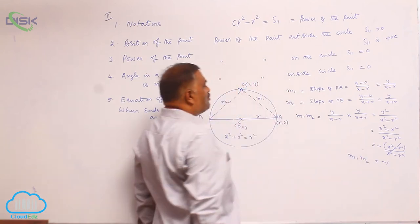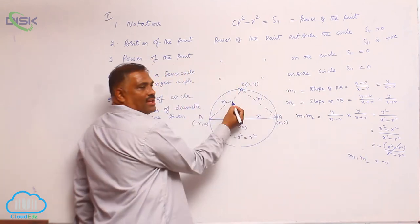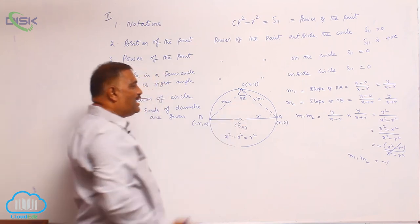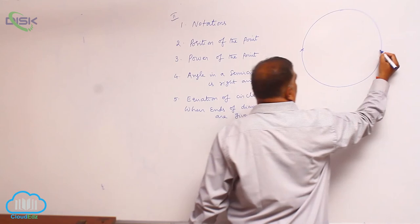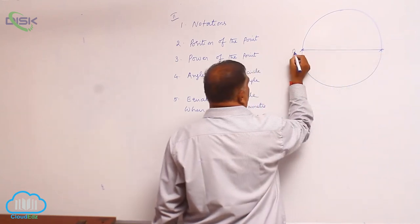Take minus common: x square minus R square by x square minus R square equals minus 1. M₁M₂ equal to minus 1 means these two lines are perpendicular. That means angle in a semicircle is equal to 90 degrees.